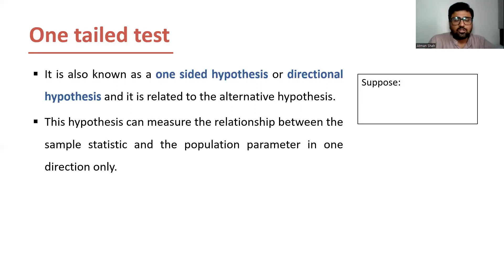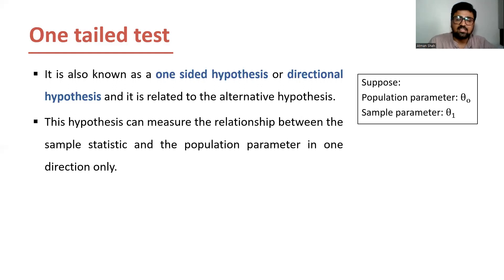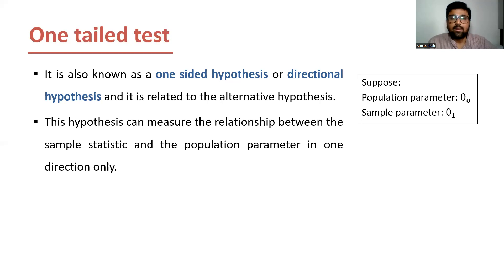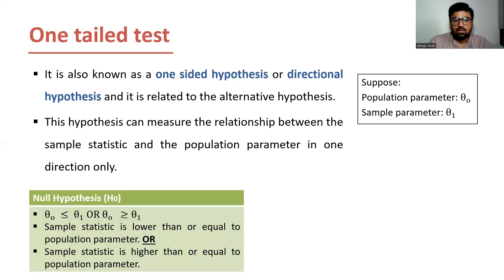Suppose the population parameter is theta 0 and the sample parameter is theta 1. We are considering this example to understand the idea of one-tailed test and two-tailed test with the help of the critical region. Now, what is the null hypothesis in this case? The null hypothesis says that theta 0 is less than or equal to theta 1, or theta 0 is greater than or equal to theta 1.